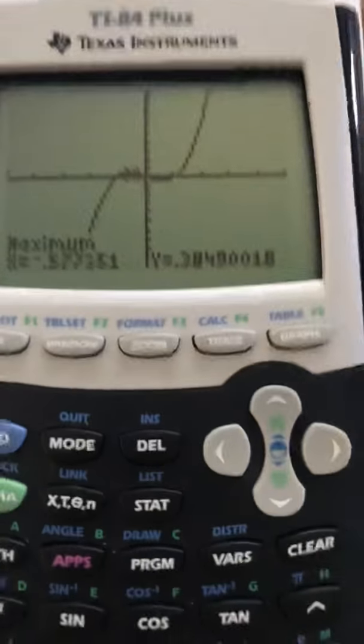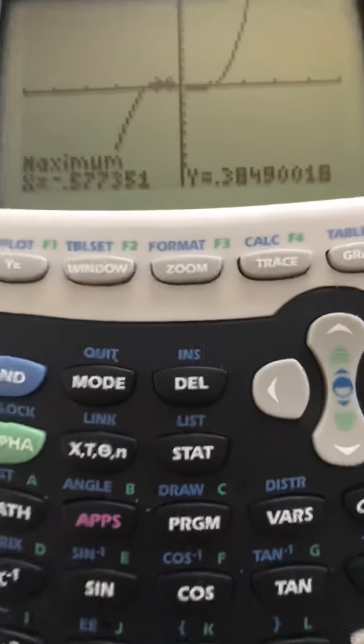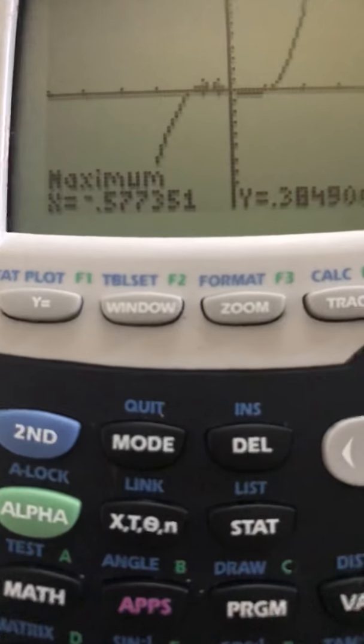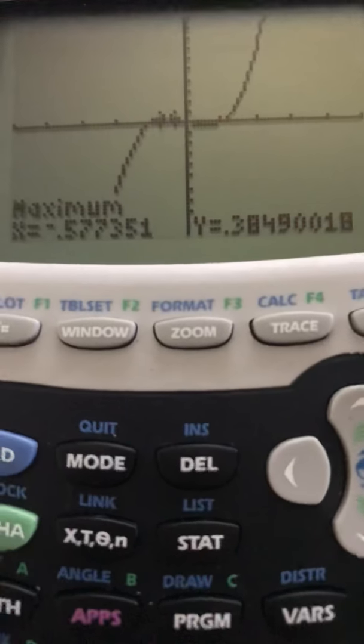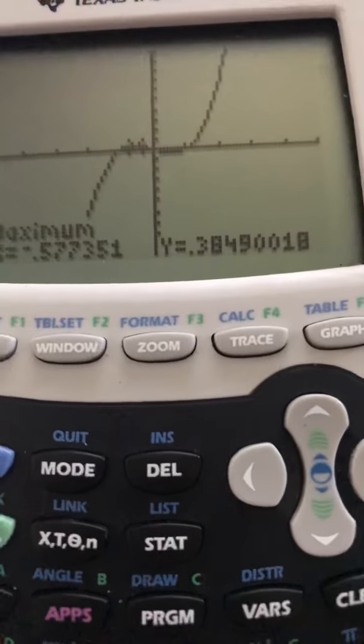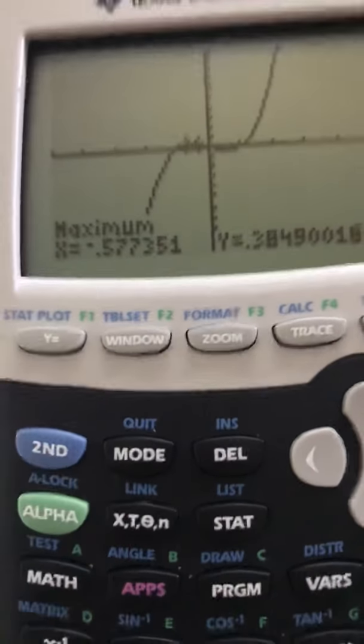Alright so my max is point, negative .577. So negative .577 is my max. Now I'm going to go find the min.